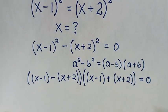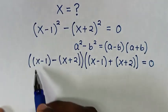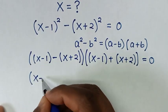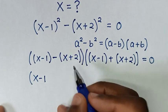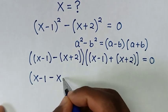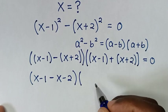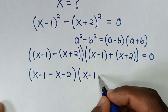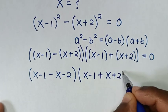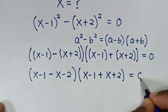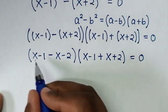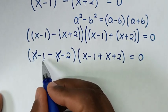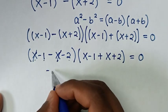In the next step we'll open these brackets. The first bracket gives x minus 1, then the negative multiplies inside giving minus x minus 2. The second bracket gives x minus 1 plus x plus 2, equal to 0. Inside the first bracket, x minus x cancels, leaving negative 3.